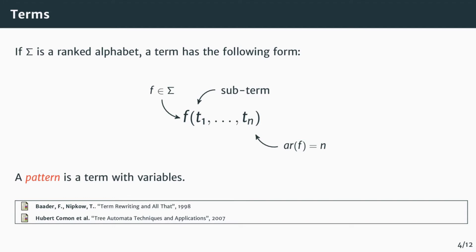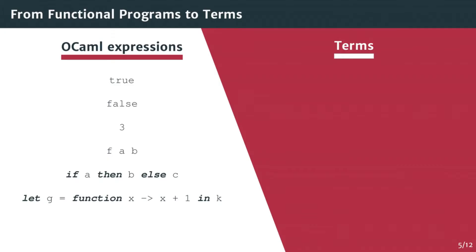We call a pattern a term that has variable in it. Terms are useful to represent functional language expressions. This slide shows how OCaml expression can be translated into terms.